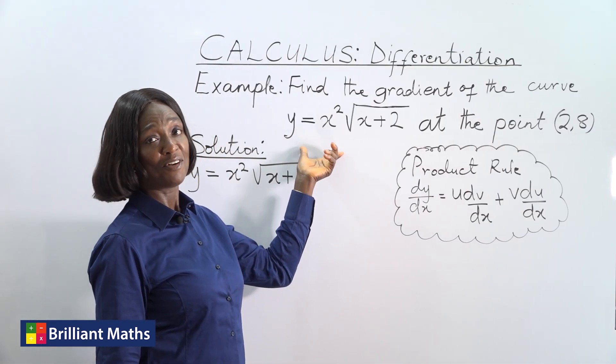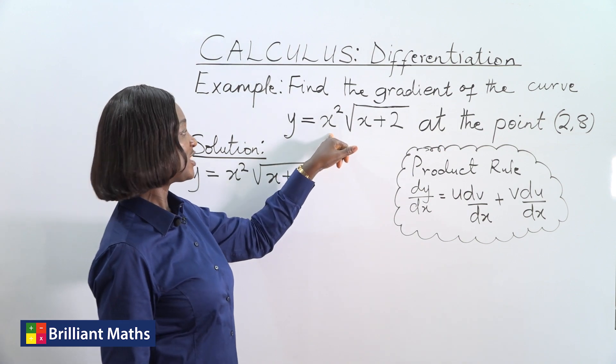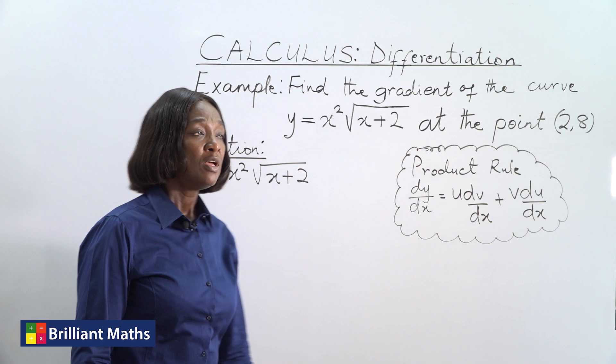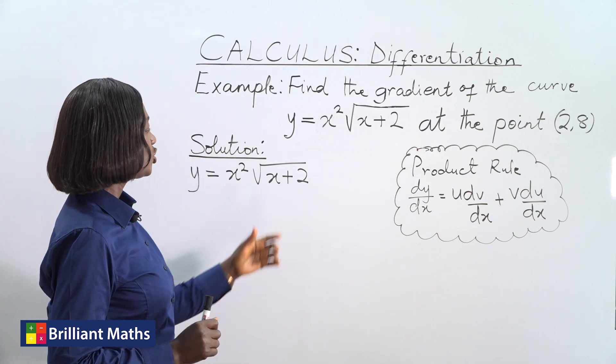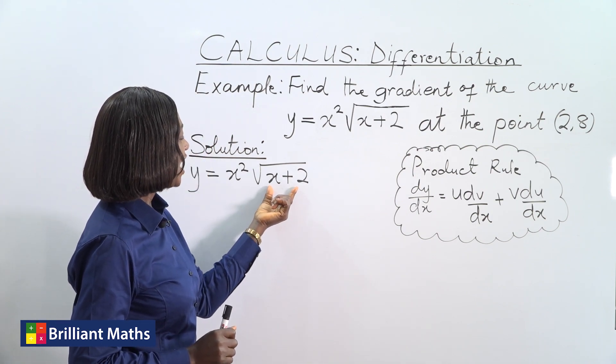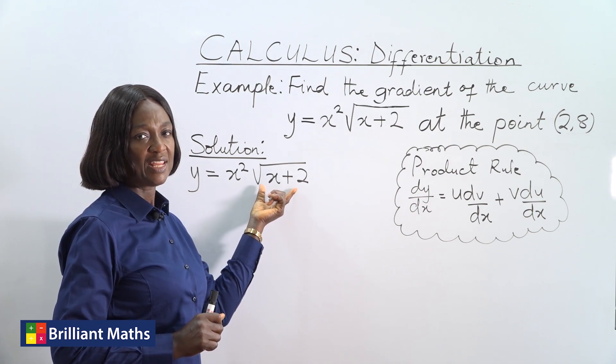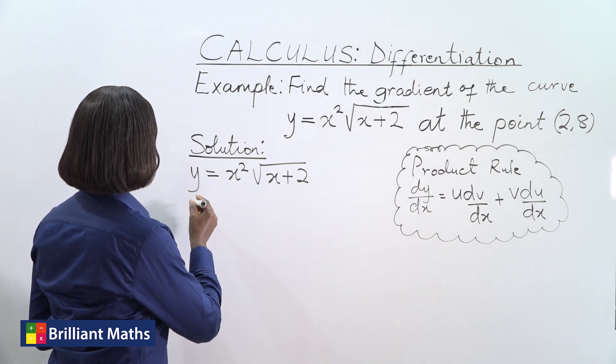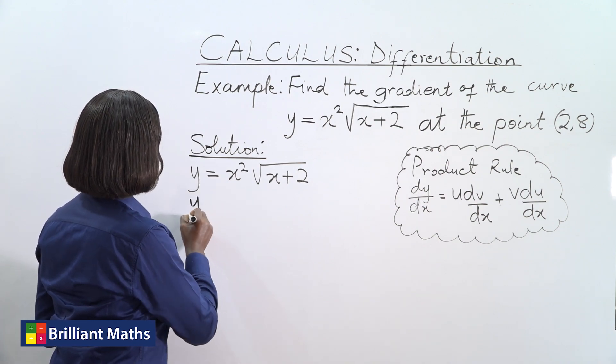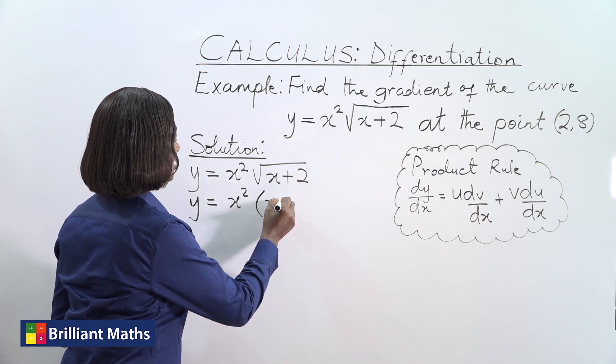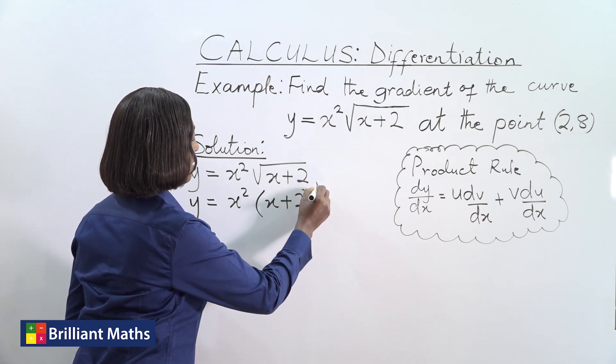Here we have two functions. The first function is x squared, and the second one is root of x plus 2. So the first step is to write x plus 2, instead of it being under the square root, we write it as an index. So we have y equals x squared times x plus 2 to the power half.